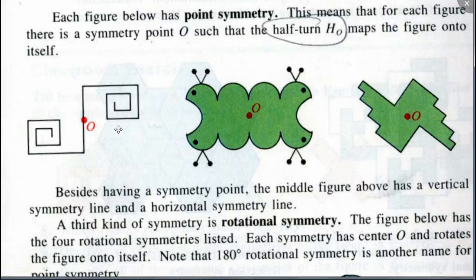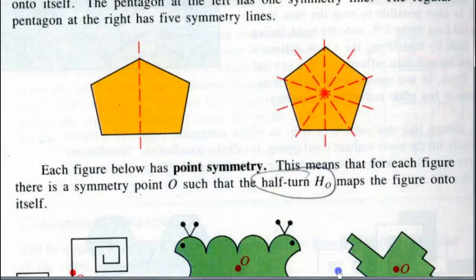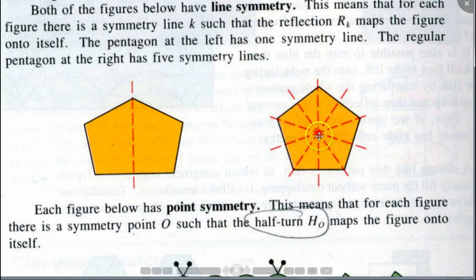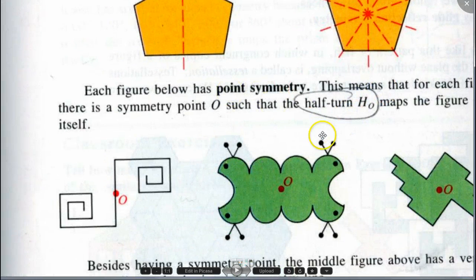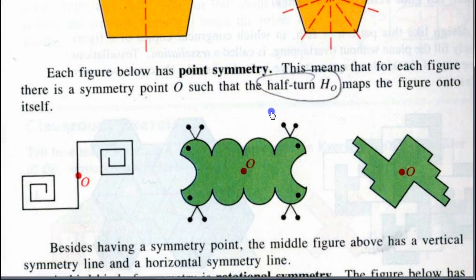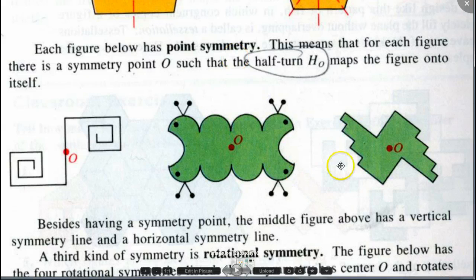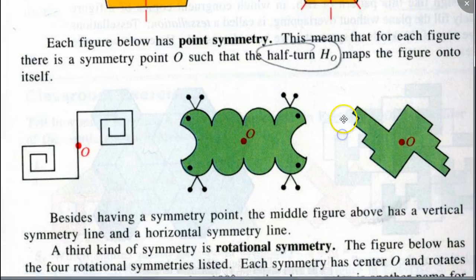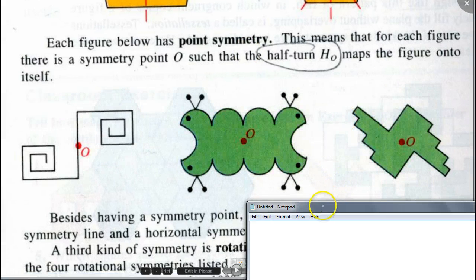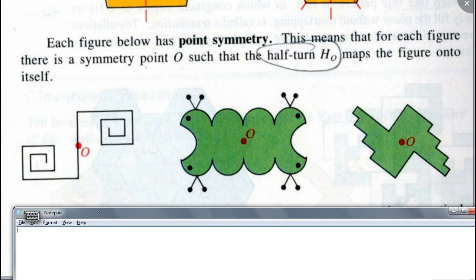Does that make sense? So again, does this figure have a point of symmetry? No. Please be careful — I said it wrong. Point of symmetry means you've got to remember that it has to be a half turn. Write that down, don't make that mistake. So if it has a point of symmetry, it's going to have to have a half turn that maps onto itself.